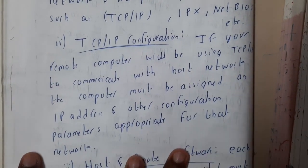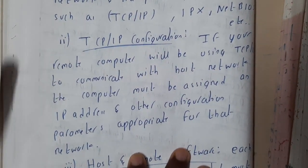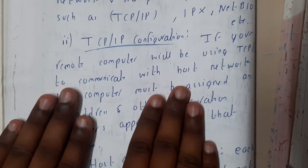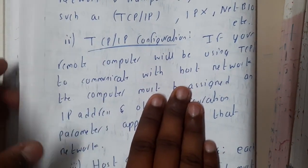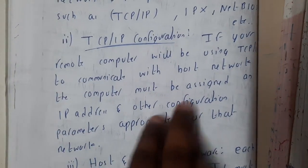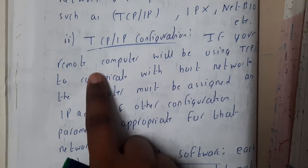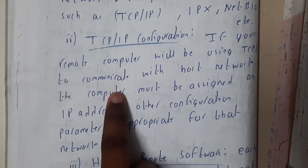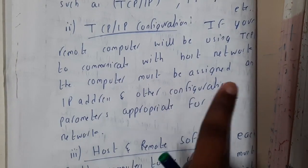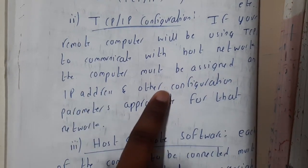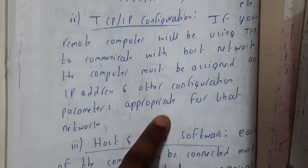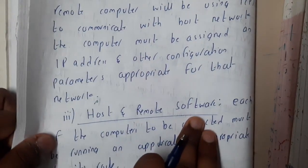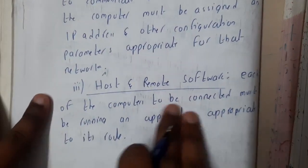Even the TCP/IP configuration should be adjusted properly on both sides. For example, if the file size here is 50 MB, it should also be 50 MB on the other side — the configuration should match. If your remote computer uses TCP/IP to communicate with the host network, the computer must be assigned an IP address and other configuration parameters appropriate for the network.